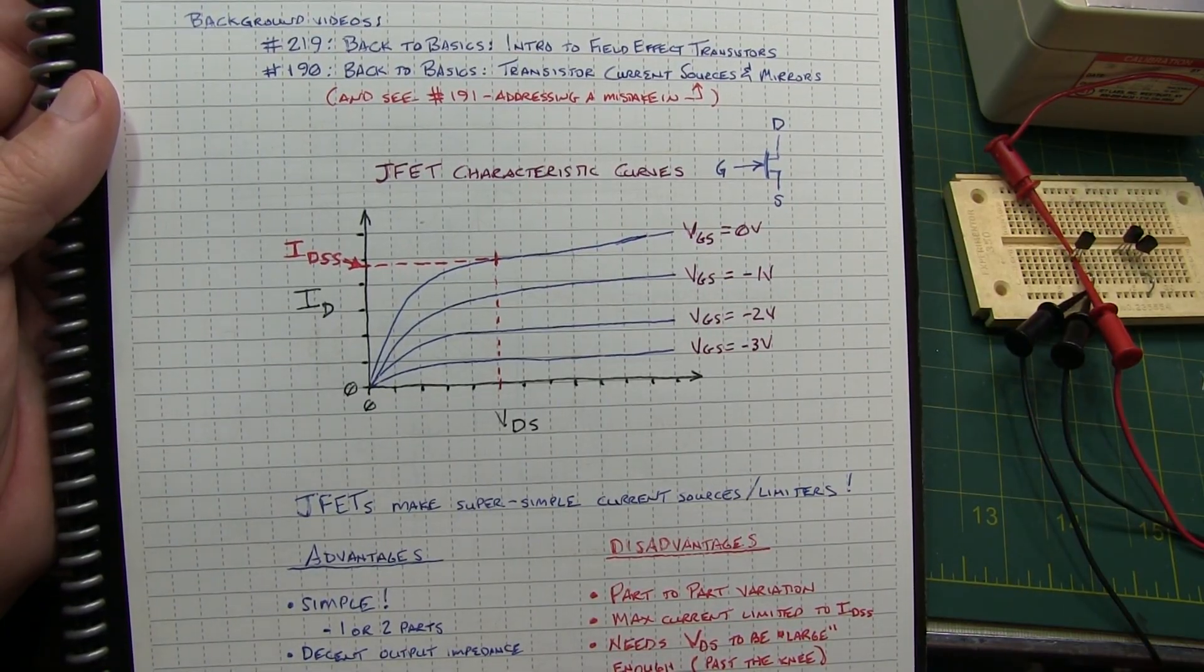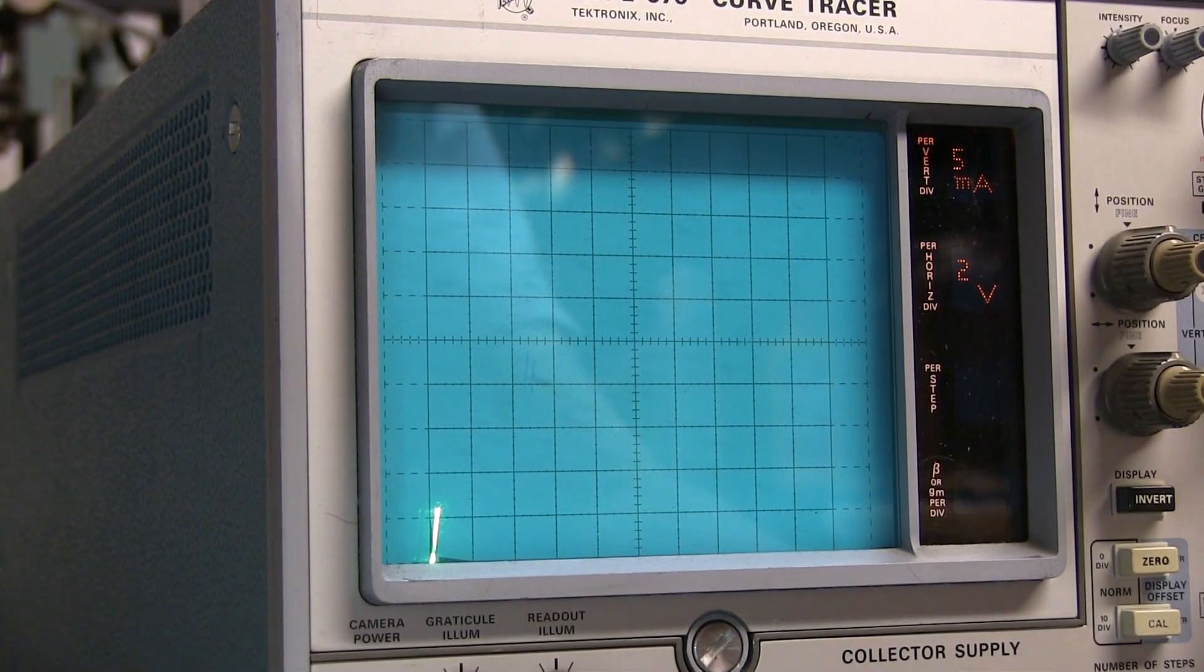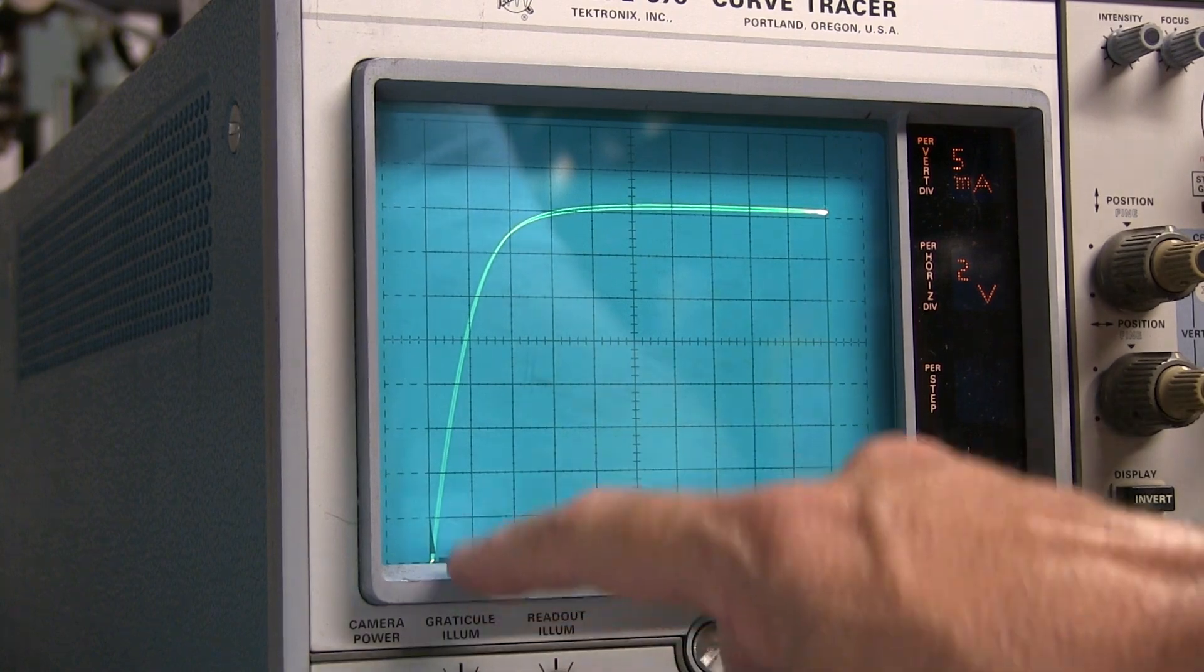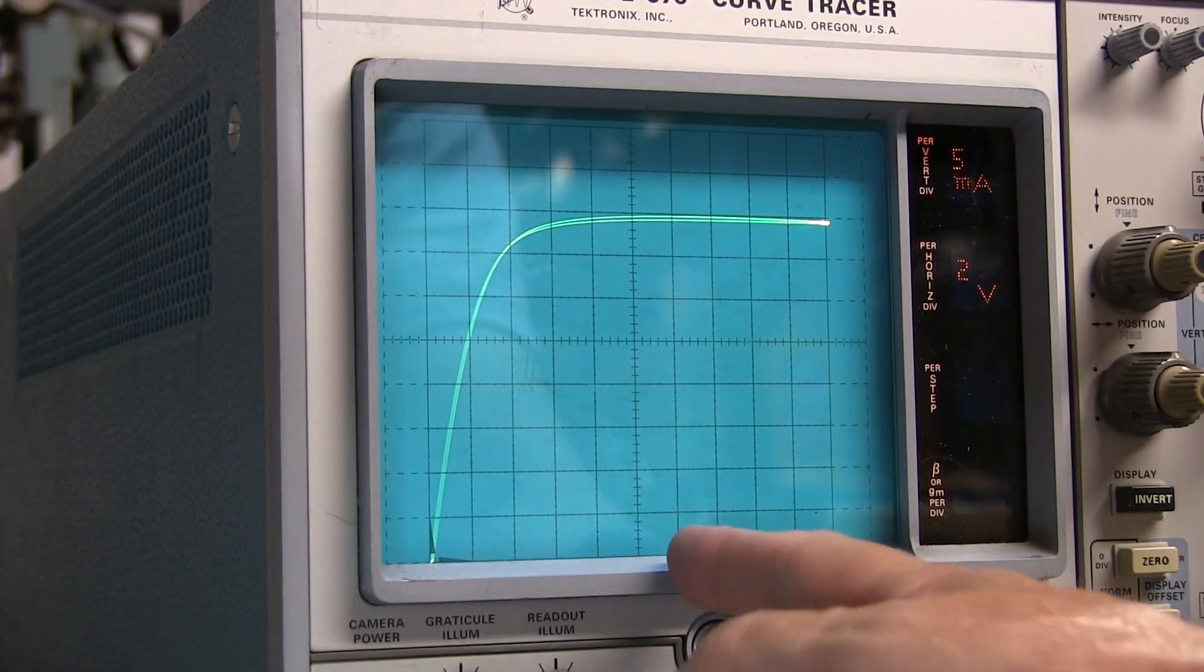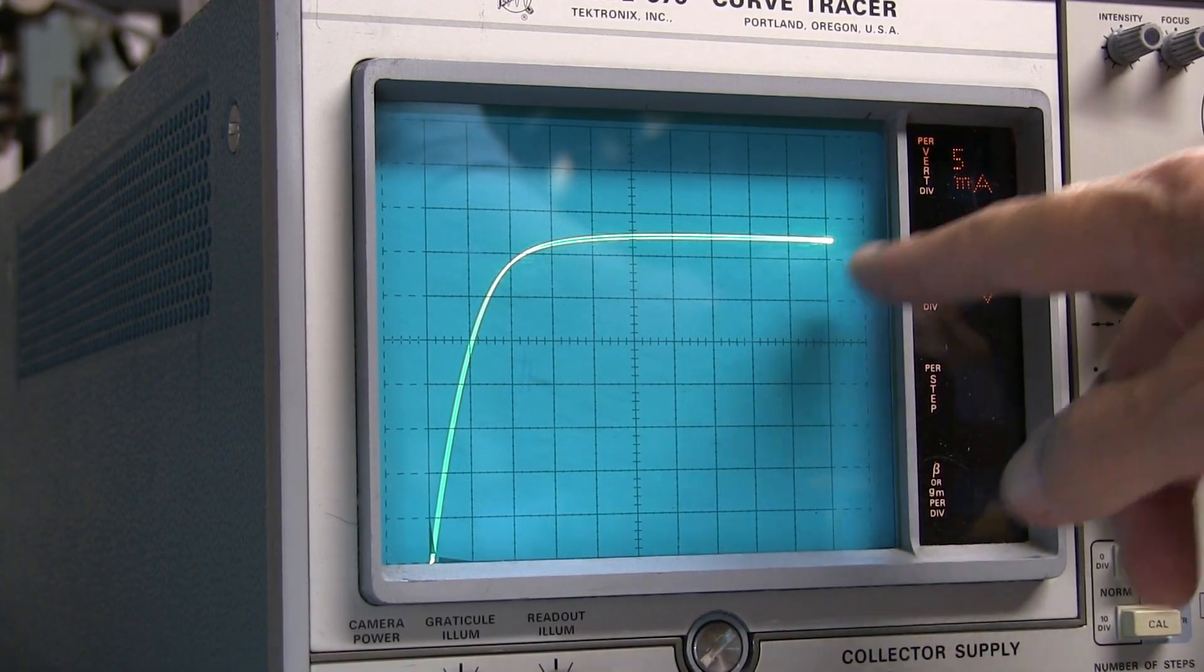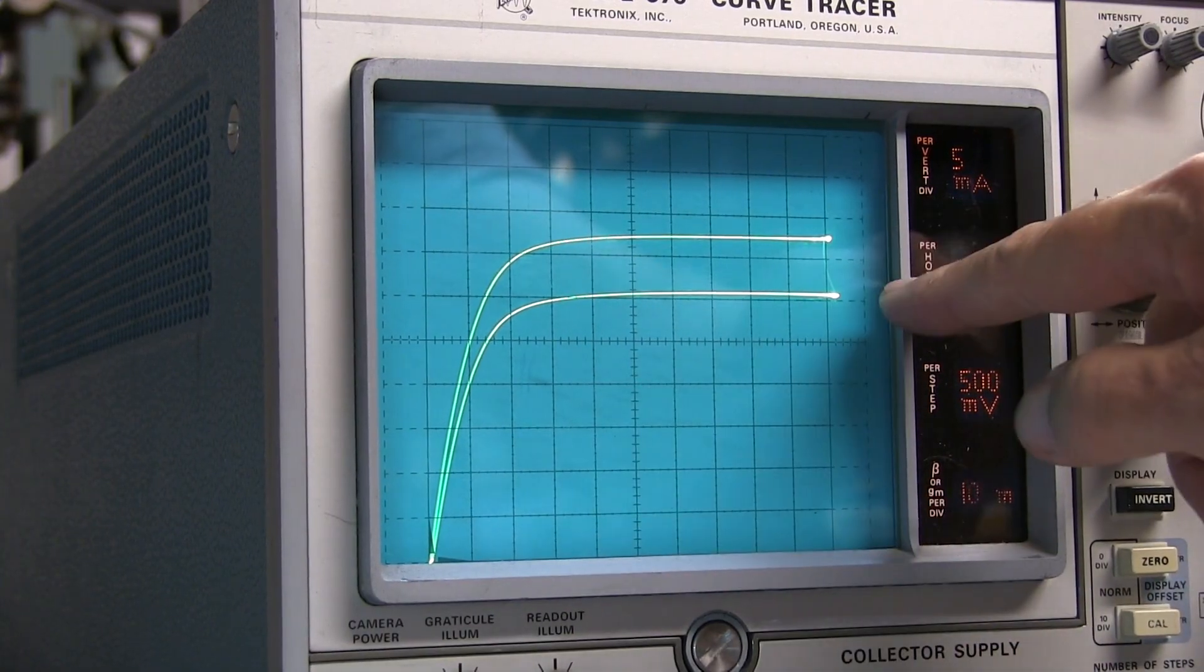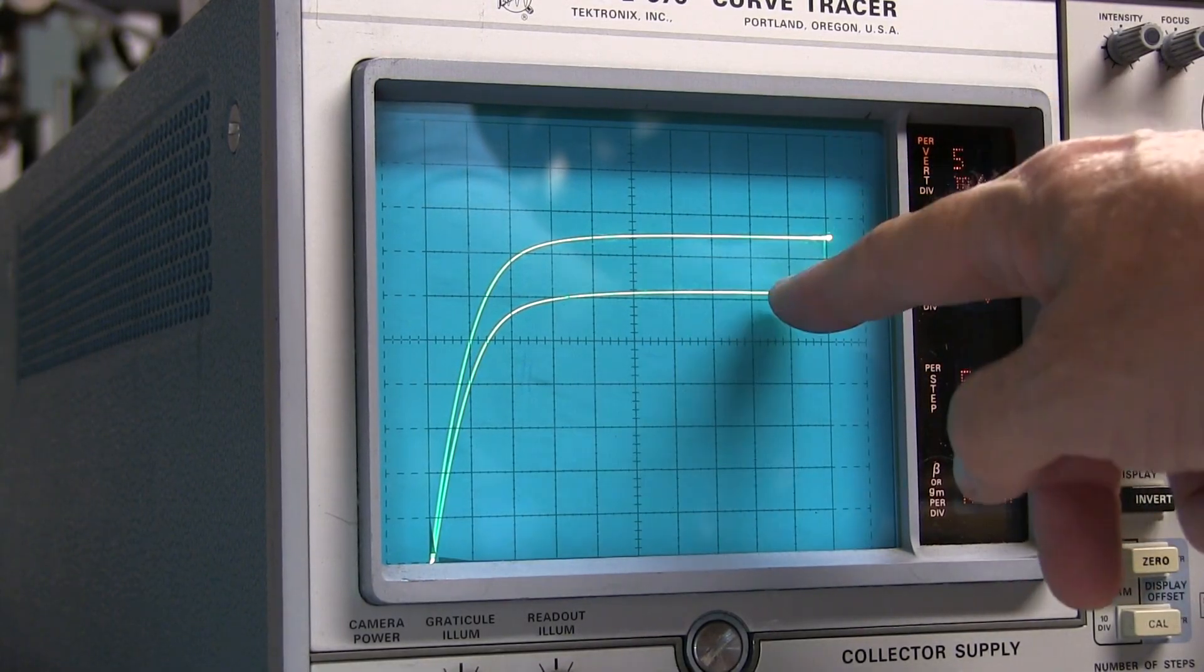Let's take a quick look at that on the curve tracer. So we've got a JFET hooked up into the curve tracer here. With VGS equal to zero volts, we can see that characteristic where we kind of come up and basically go constant current. Once we get five or six volts or so across the drain to source, we're essentially at a constant current. Now as we start bringing the gate voltage below the source voltage, we'll see the drain current getting lower and lower. Start off by adding just a single step, that's with VGS equal to minus 0.5 volts.